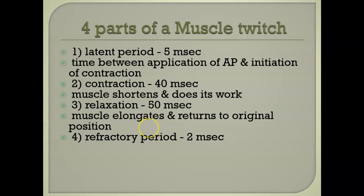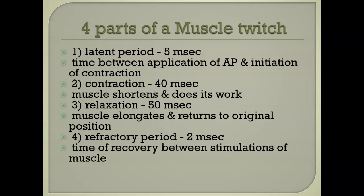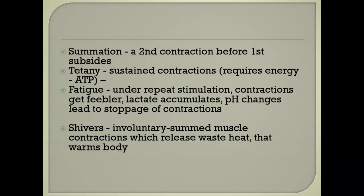We're going to look at two types of muscle fibers: those that have a fast twitch and those that have a slow twitch. If you do the math — 50 plus 40 plus 5 plus 2 — that's 97 milliseconds. With a complete muscle fiber with multiple motors, you can get it to come back again. That's summation. You can get a long sustained contraction, but that requires a huge input of ATP. That's called tetany.